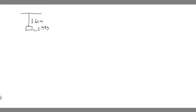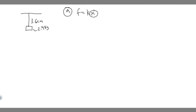Let's start with Part A. We're trying to find the spring stiffness constant — essentially, we're solving for K. According to Hooke's Law, we know force F is equal to Kx. The spring stiffness constant is K, which is the variable we have to solve for. F is the force being applied and X is the distance, and we know both of these variables.